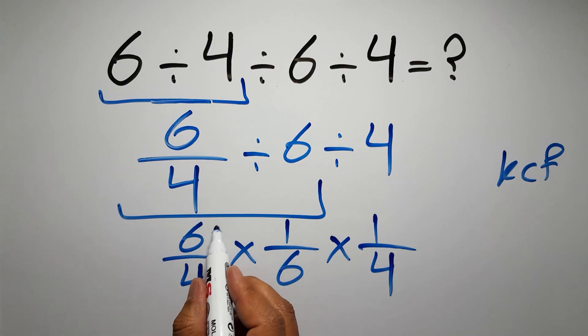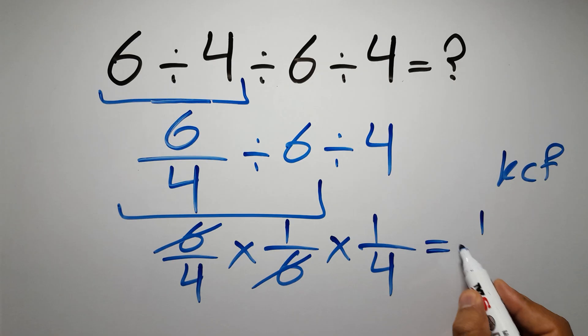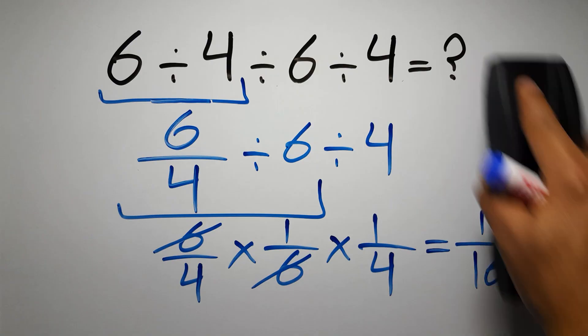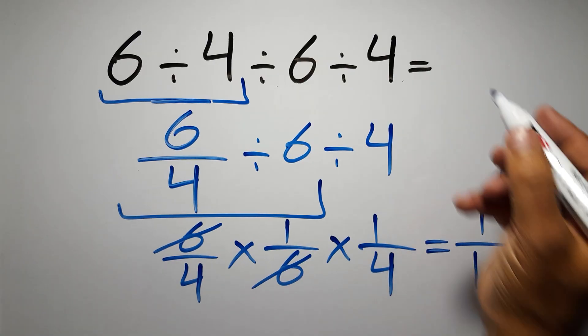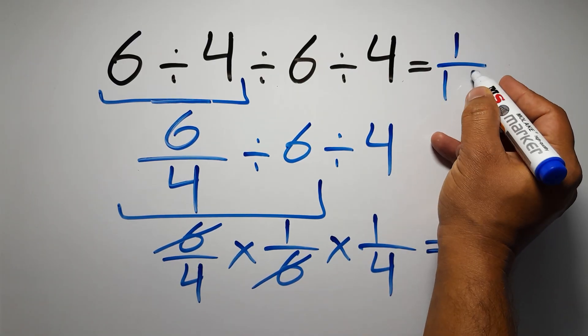We can easily cancel this 6 and this 6, so we have just 1 over 4 times 1 over 4, which equals 1 over 16. And this is our final answer to this problem. The correct answer is 1 over 16.